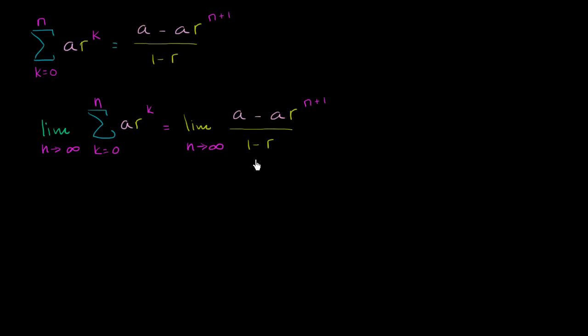If r was equal to 1, then the denominator is going to become 0, and we're going to be dividing by that denominator, and this formula just breaks down.